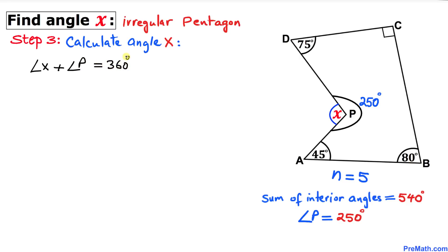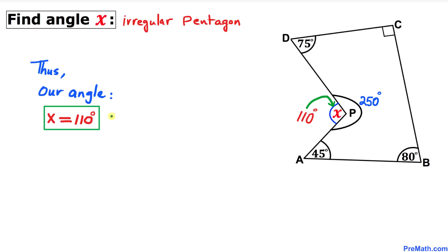Angle P is 250 degrees, equal to 360 degrees. Let's subtract 250 degrees from both sides, and angle X turns out to be 110 degrees. Thus, our angle X is 110 degrees.